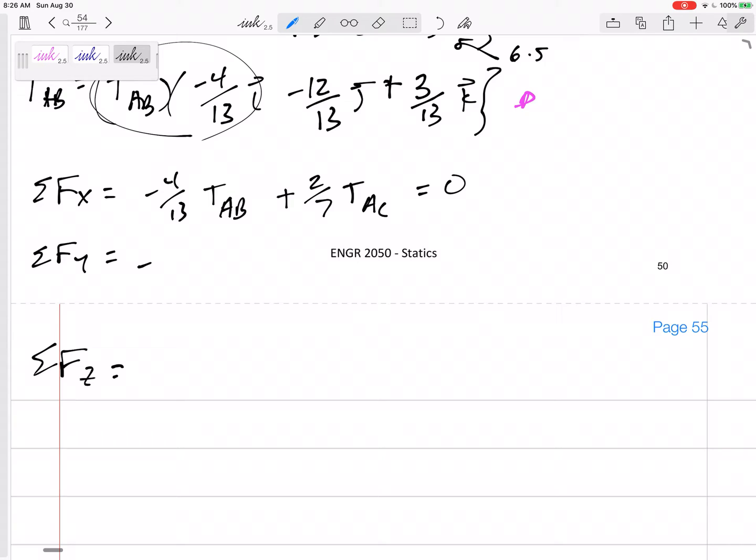Then, the next, sum the forces in the Y, negative 12 thirteenths TAB, negative 6 sevenths TAC, 6 over 7.5 FAD, we'll call it, equals 0.